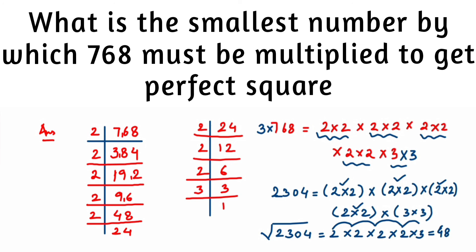That's the answer — the smallest number to multiply 768 by is 3. We've covered all the problems. If you have any questions or doubts, drop a comment below and I'll try to make a video or answer it. Thank you for watching!